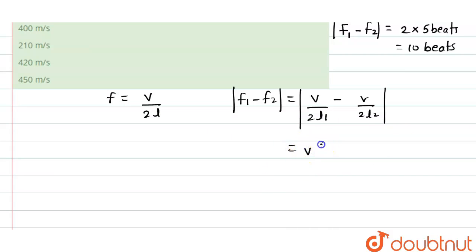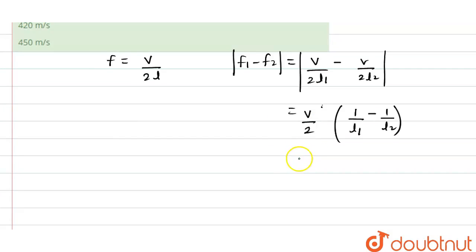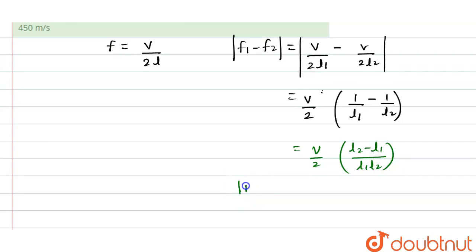We can write v by 2 as common, then we will get 1 divided by l1 minus 1 divided by l2. Now we can substitute the values here and we will get v by 2 into l2 minus l1 divided by l1 into l2.